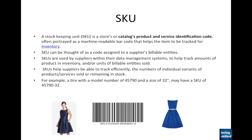SKUs help suppliers to be more efficient in terms of tracking products. The number of individual variants of a product sold or remaining in stock can be traced very easily. For example, if a product has different sizes like 28, 30, 32, 34, 36, we can have a separate number hyphenated with the primary SKU. So if 45790 is the primary SKU and the size is 32, it becomes 45790-32, pointing to both the product and its size.